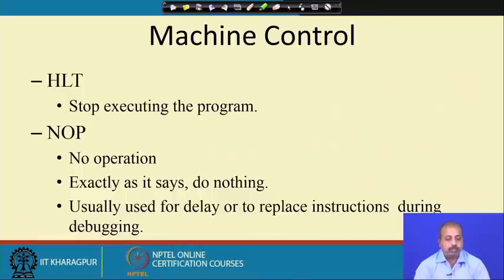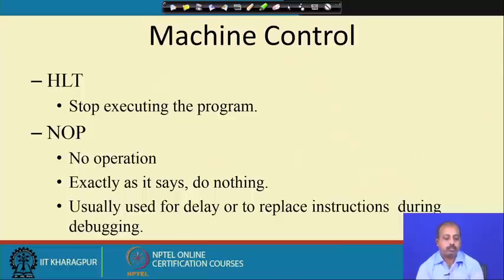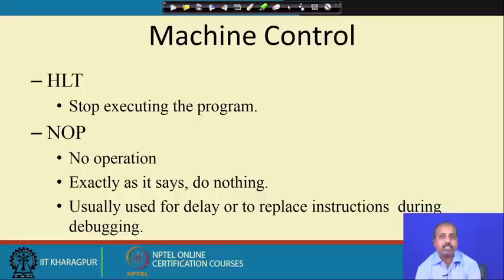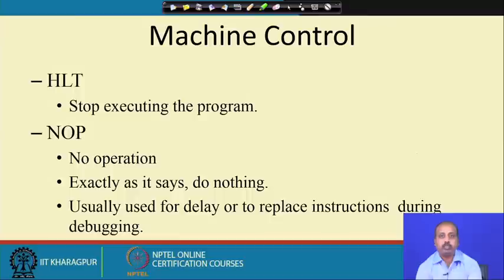Machine control instructions include the HALT instruction to stop program execution. When HALT executes, the entire operation of the system comes to a stall — the processor will fetch no more instructions. Only an interrupt can take it out of the halted state. There is also NOP (no operation), which does nothing and is used mainly for delay. It is also useful for program debugging.